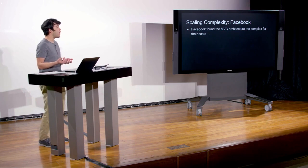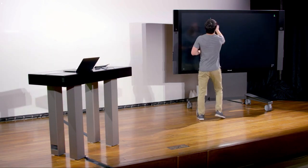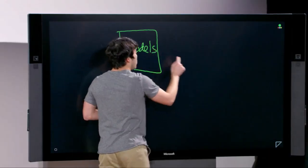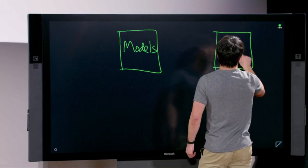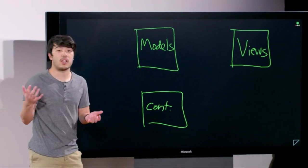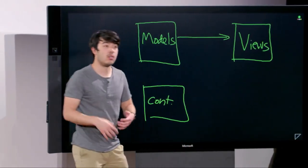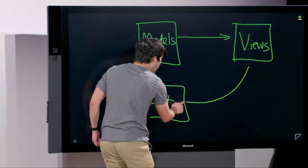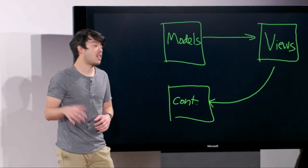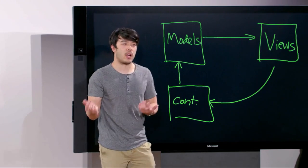One company that's run into scaling issues is Facebook. They found that the MVC architecture is a little bit too complex for their scale. For those of you who took CS50, we talked about this architecture called model-view-controller. In MVC, we have models, views, and controllers. Views are basically what a user sees, and the data loaded into views comes from models. A user interfaces with views through a controller, and the controller dispatches an action — when a user clicks a button, for example — that goes and updates a model. But also, some views might directly change models.